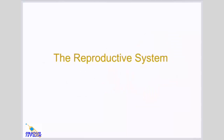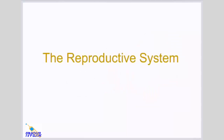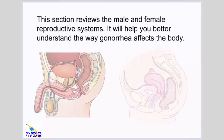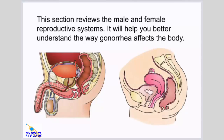The reproductive system. This section reviews the male and female reproductive systems. It will help you better understand the way gonorrhea affects the body.